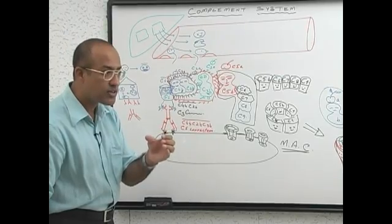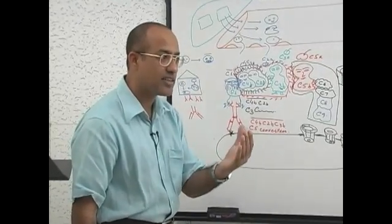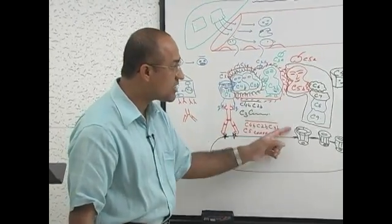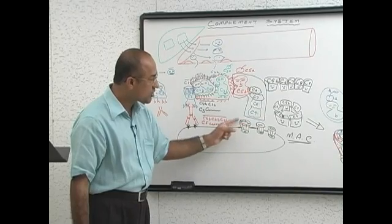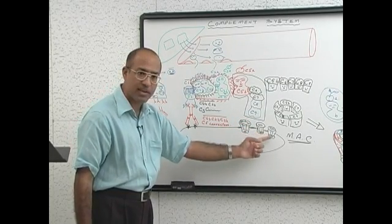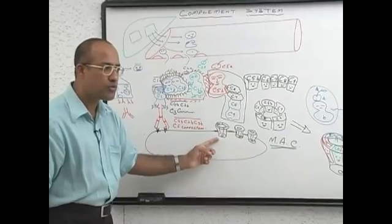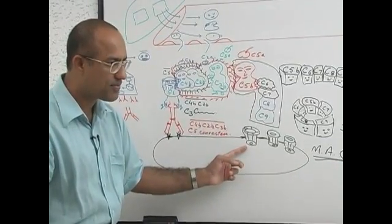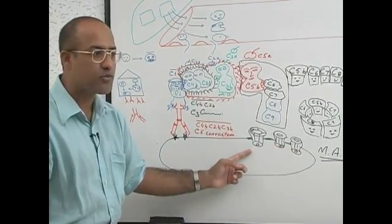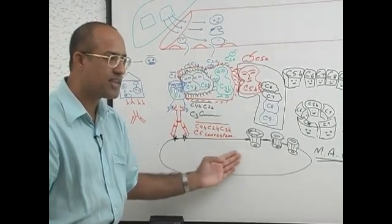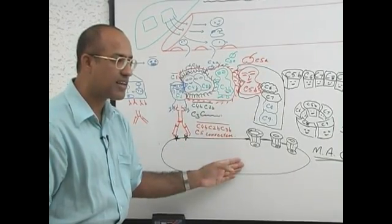The Membrane Attack Complex consists of the last components of the complement activation system: C5b, C6, C7, C8, and C9. They make pores — they don't digest the membrane enzymatically, there is no enzymatic damage. They simply circularize and mechanically dissolve into the lipid membrane of the bacteria, disrupting the physical integrity of the bacterial membrane. So bacteria cannot keep its internal environment — things inside leak out, unwanted things move in, and the bacteria dies.